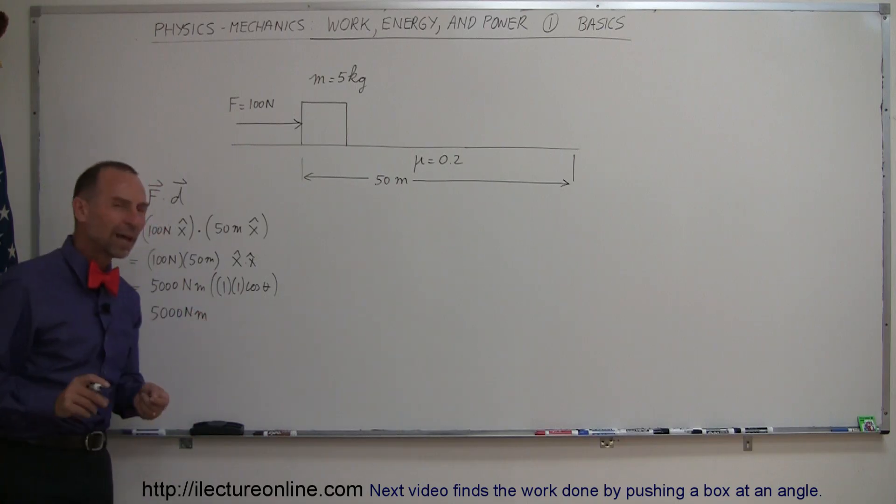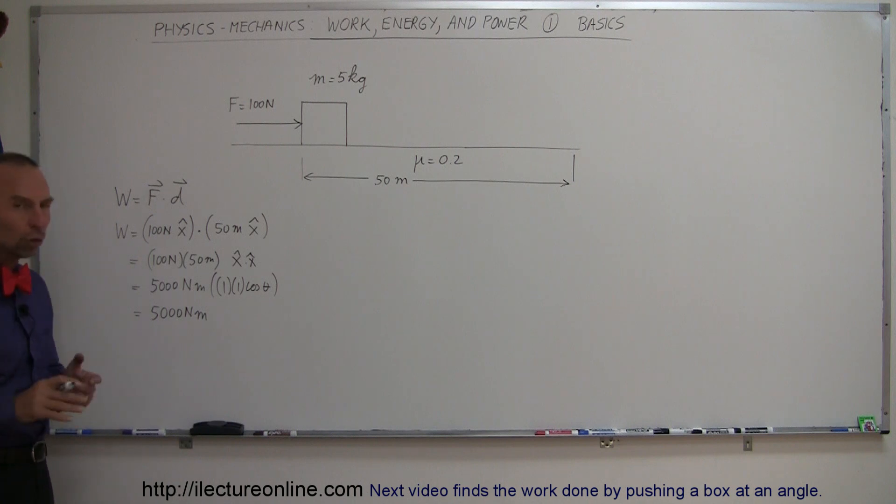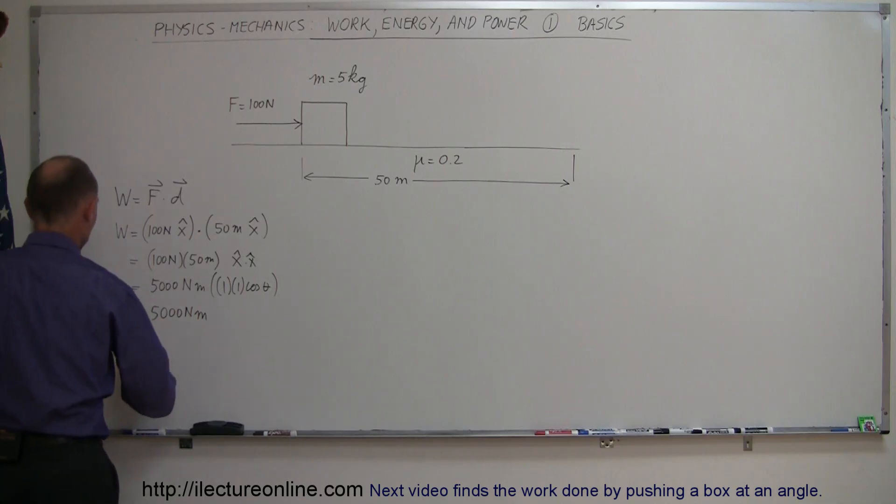Now, what is a newton meter? Well, we have another unit for that. We call that joules, named after the famous physicist Joule, who discovered the relationship between mechanical energy and heat. So this work is therefore 5000 joules.